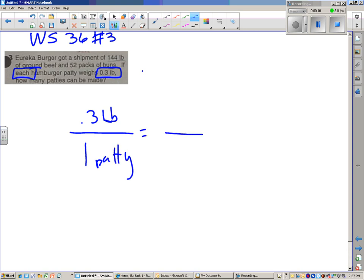So you set that up equal to the 144 pounds for the shipment. What information is on top of my ratio? What information is on top of 0.3 pounds over one patty? Pounds. So where would I put 144 pounds? On top. 144 pounds goes on top.